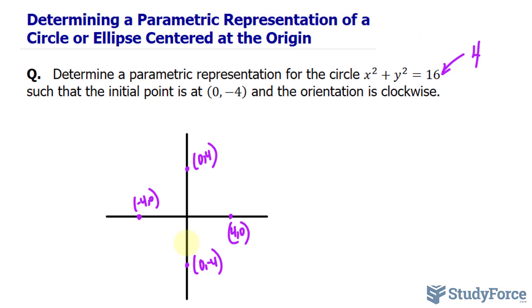So the initial and the terminal point will be at both 0 and negative 4. Keep that in mind. Our circle will look like this. And because it's moving clockwise, I'll put arrows that go in this direction.